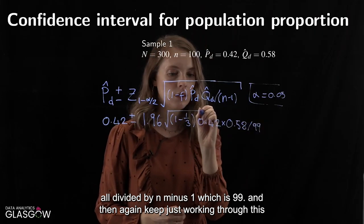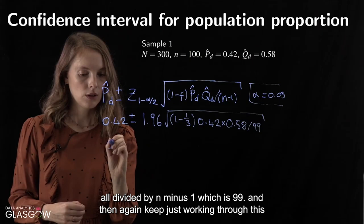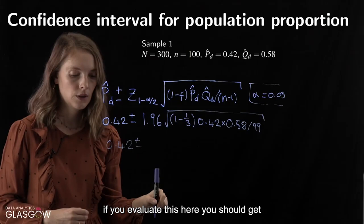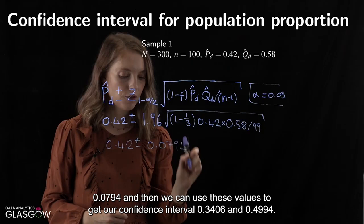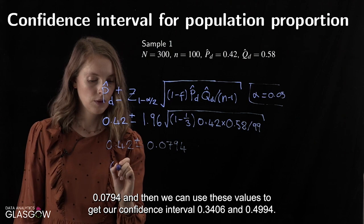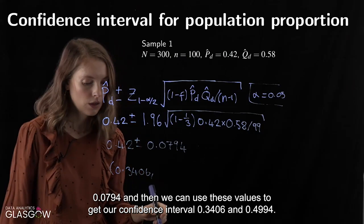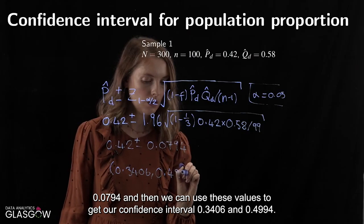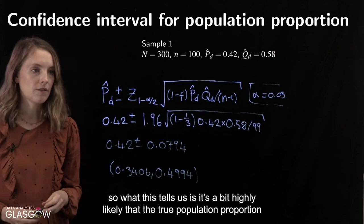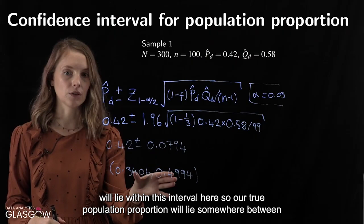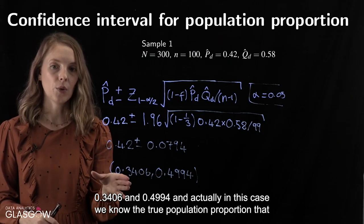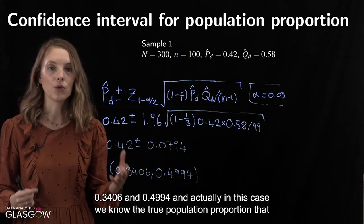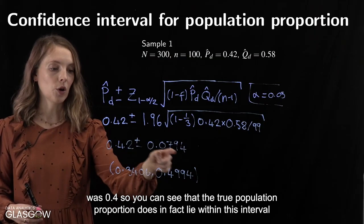Working through the calculation gives a value of 0.0794 for the margin term. Using these values, our 95% confidence interval is (0.3406, 0.4994). This tells us it is highly likely that the true population proportion lies within this interval. And indeed, in this case we know the true population proportion is 0.4, which does fall within the interval [0.3406, 0.4994].